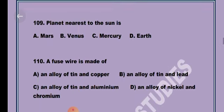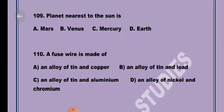Question 9. Planet nearest to the sun is Option C, Mercury. Next question, Question 10. A fuse wire is made up of Option B, an alloy of tin and lead.